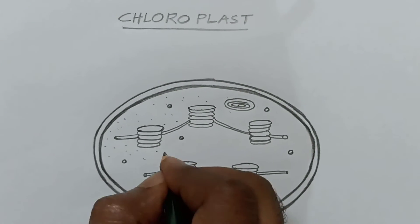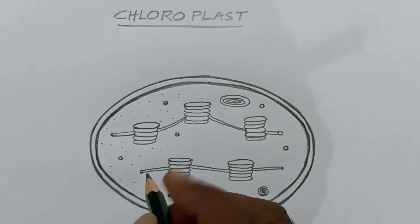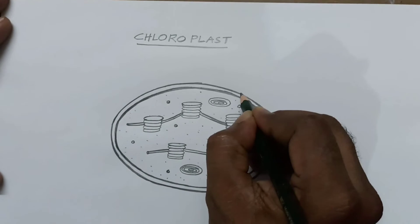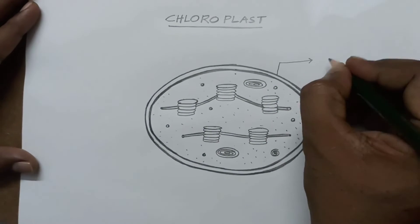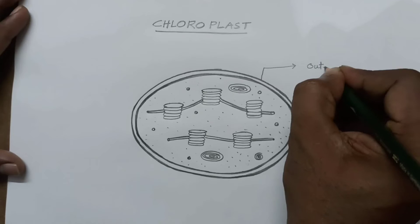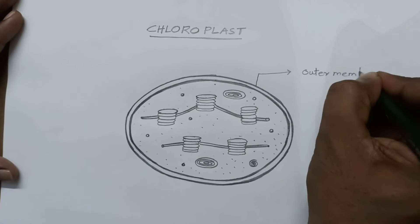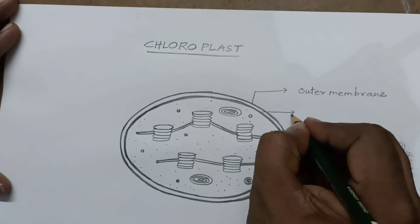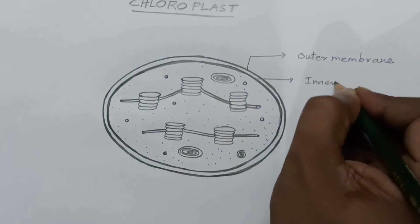Stroma is a fluid-filled area inside the inner membrane. Now let's label the parts: outer membrane and inner membrane.